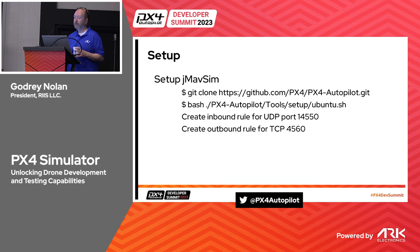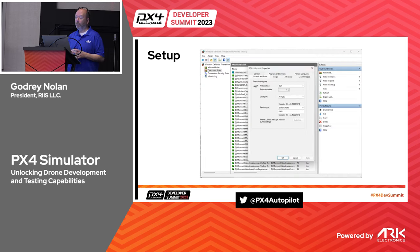So what is the code that I need to get there? Git clone, bash run Ubuntu, and then make sure that you're opening the inbound rules for UDP on port 14550, and then the outbound rules on TCP 4560. If you're not used to doing that, you basically go into the Windows Defender Firewall, and then under the advanced settings you can create your rules for inbound and outbound rules.